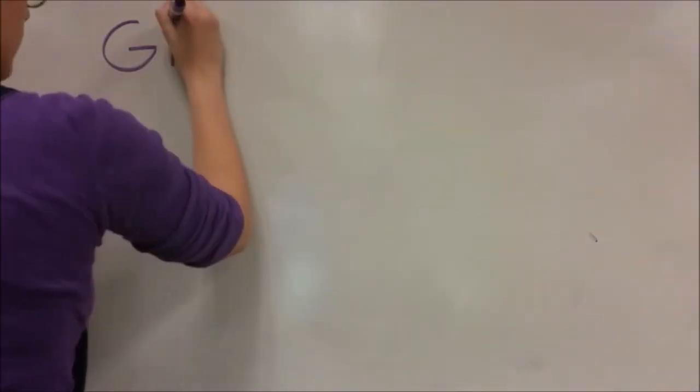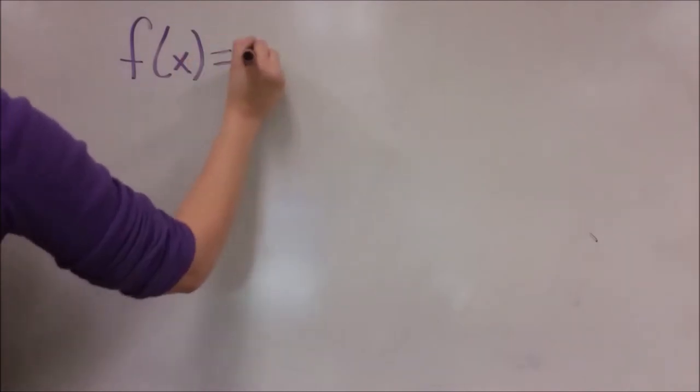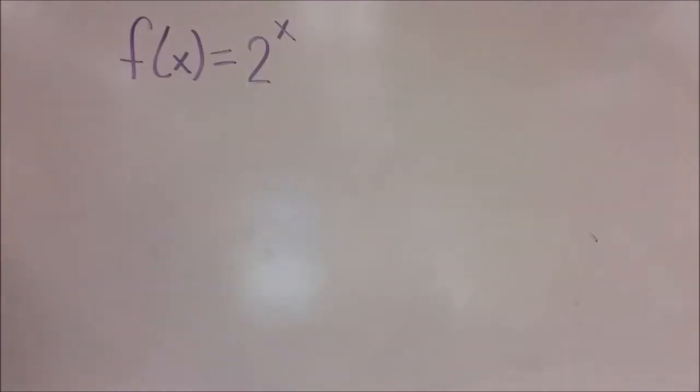Now that you know my roots, we can talk about my journey in graphing. The easiest way to graph me is assuming that my initial value is equal to 1. My form would then be f of x equals a to the x. For example, let's say we have f of x equals 2 to the x.